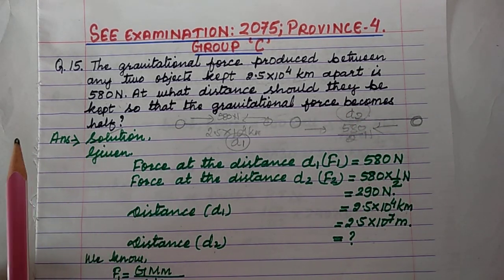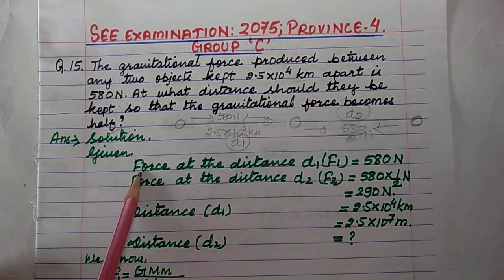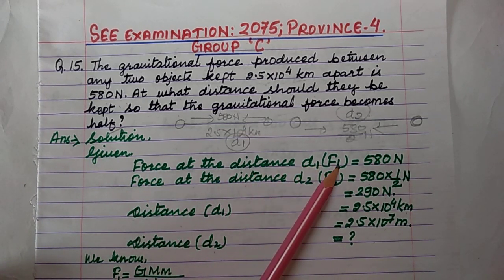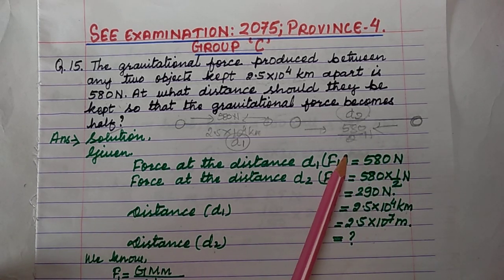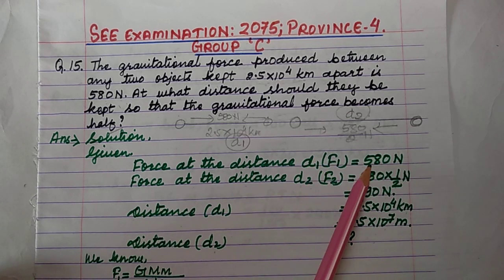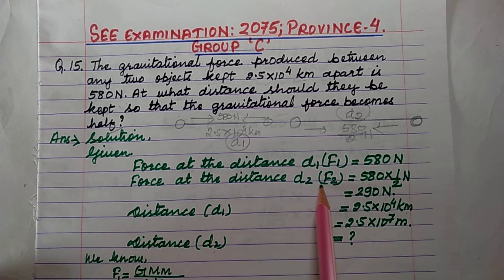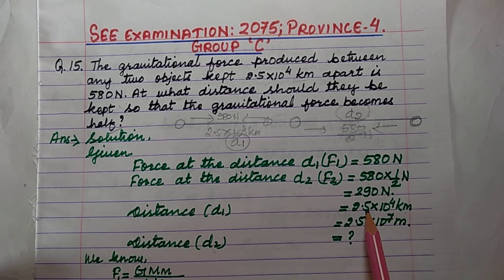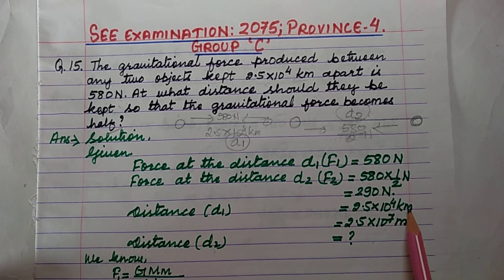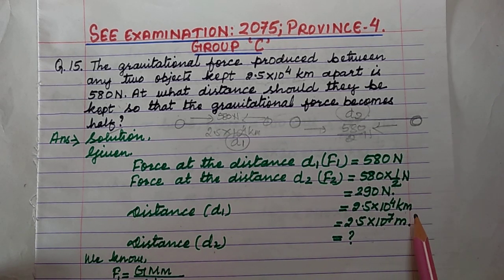The information given: force at distance D1, F1 = 580 Newton. The new force F2 is half of the previous one, so F2 = 290 Newton. Distance D1 is given as 2.5 × 10⁴ kilometers; converting into meters by multiplying by 1000, it becomes 2.5 × 10⁷ meters.